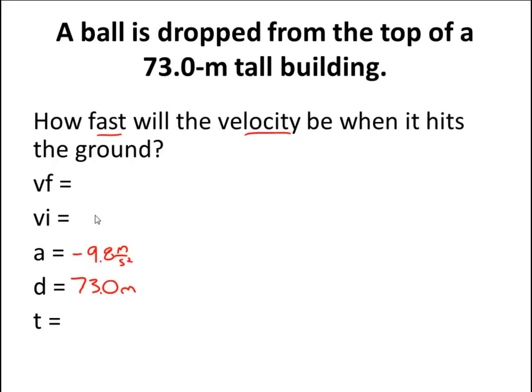The initial velocity. Well, when you drop a ball, initially it's in your hand, and therefore it's going to be at rest. So therefore, we're going to have 0 meters per second as our velocity.